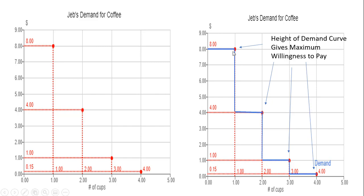For the first cup of coffee, we go to the height of the demand curve here — Jeb, at most, is willing to pay $8. He's not going to pay $10 or $9 for the first cup; at most he'll pay $8. The same idea applies for the second, third, and fourth cup. For the third cup, at most Jeb would be willing to pay $1 — he's not going to pay $2 or $3 or anything above $1.